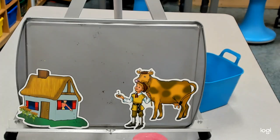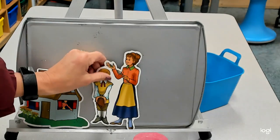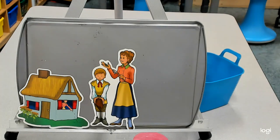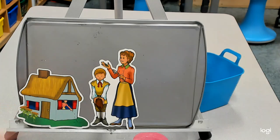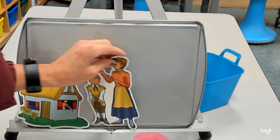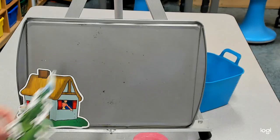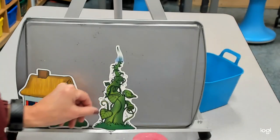When he got home his mother was horrified. She said to him, 'Off to bed with you!' She was so angry that she threw the beans out the window, and poor Jack went to bed and cried himself to sleep. But when Jack woke up the next morning he ran to the window to see if something had grown, and there it was in his backyard — a giant beanstalk! It stretched up and up into the sky as far as Jack could see.